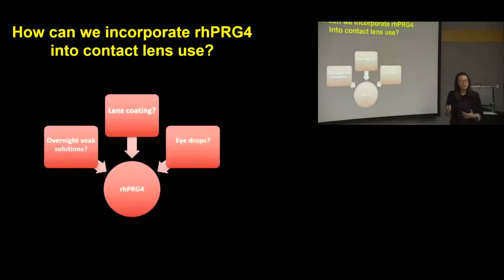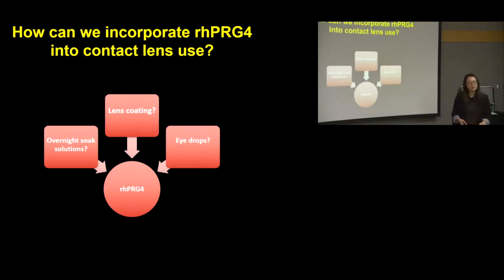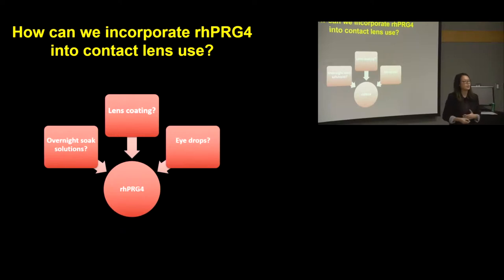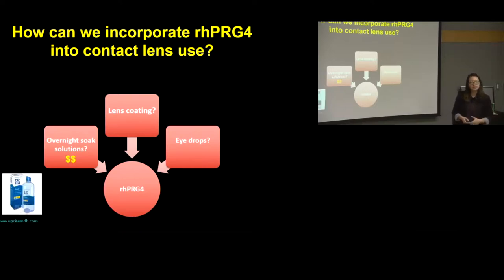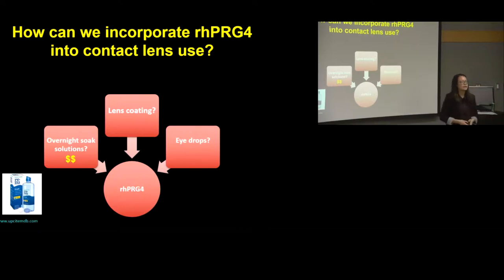For our lab, we're interested in how RH-PRG4 can be incorporated with contact lens usage. There are three ways to go about this. The first is an overnight soak solution — where you take off the lenses at night, wash them, and put them in a saline soaking solution with PRG4 incorporated. However, this option is quite expensive because of the large quantities of RH-PRG4 needed.